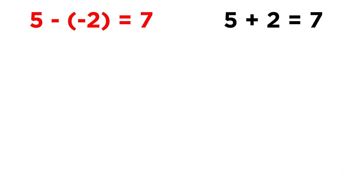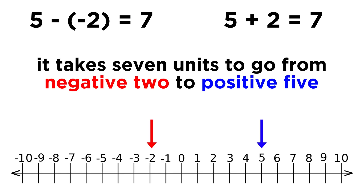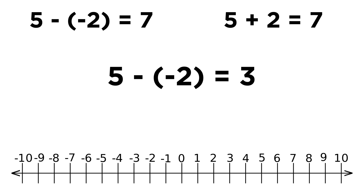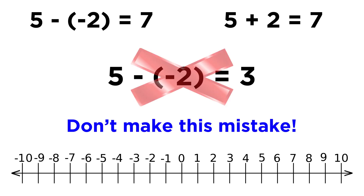That's ten more than negative ten, so it's like the bank gave you ten dollars. So five minus negative two is the same as five plus two, which gives us seven. We can even verify this on the number line, as there are indeed seven units between negative two and five. Incorrectly subtracting negative numbers is a very common source of error for math students, so make sure you don't make these kinds of mistakes.